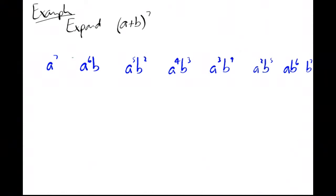And we can get our coefficients from the Pascal's triangle: 1 7 21 35 35 21 7 and 1. Last thing to do, because it's an a plus b, they're all going to be plus between them.